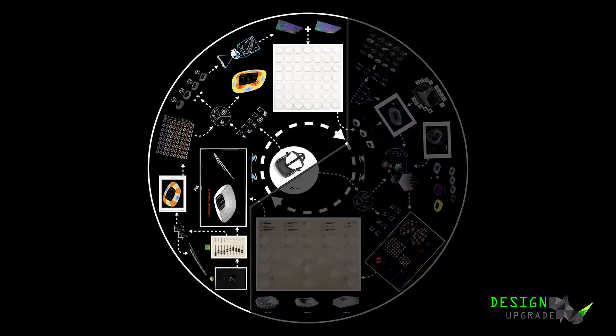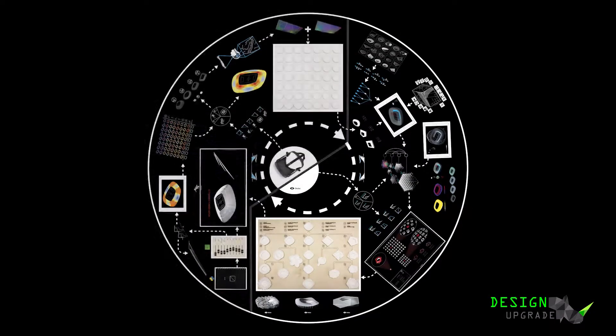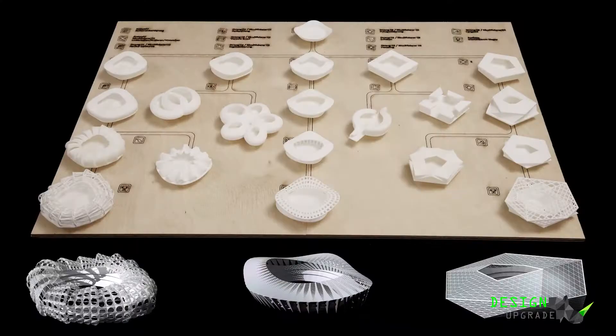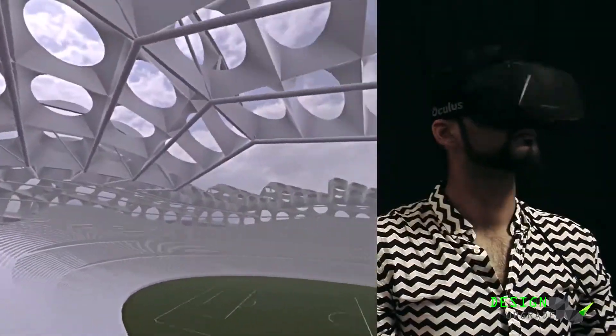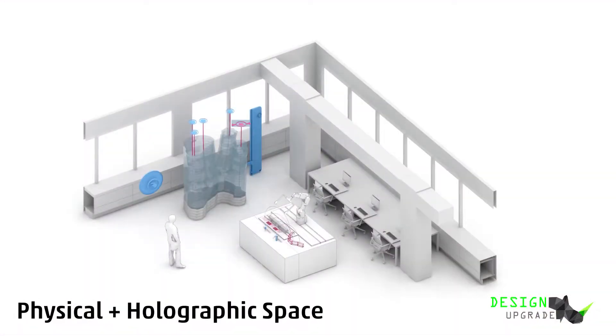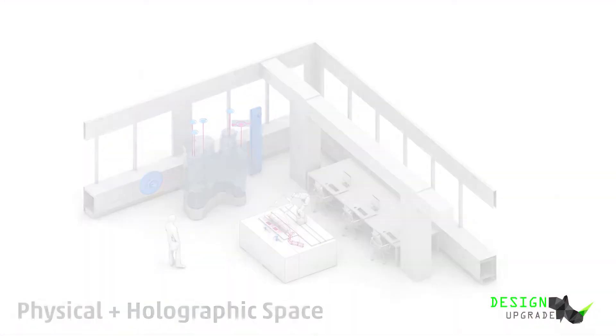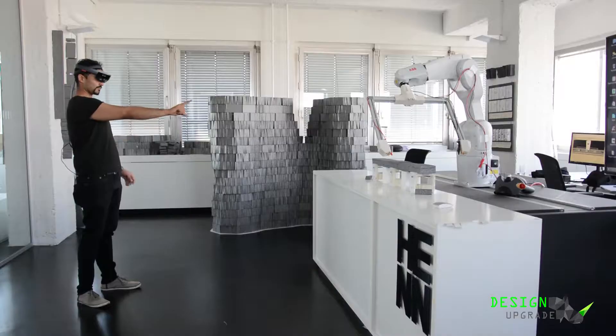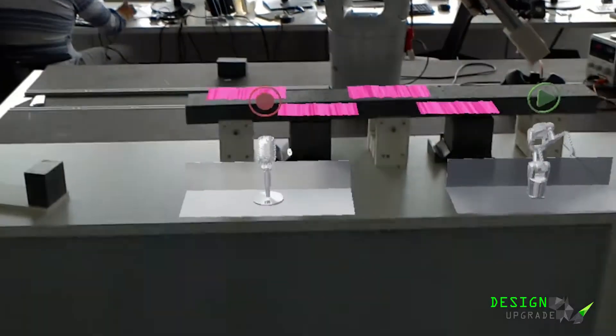I graduated at the University of Arts in Berlin with a diploma degree in Architecture. After that, I started to work as a complex modeling and environmental design specialist for HEN Architects.